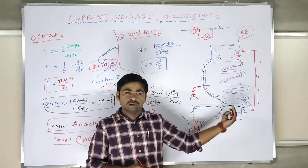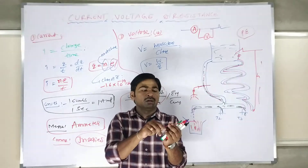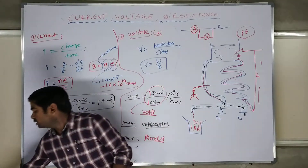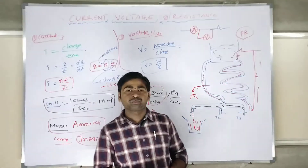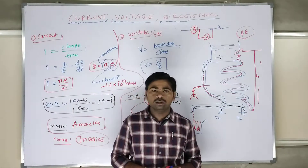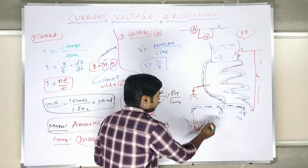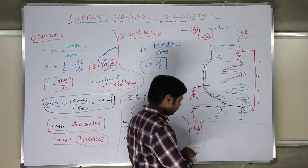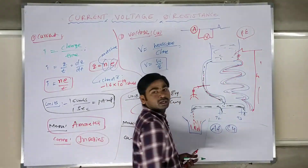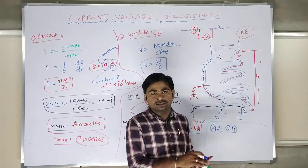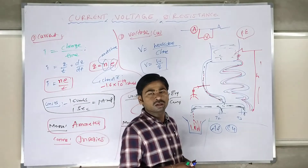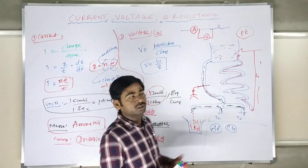Resistance is the property of a material which opposes the flow of electrons. For example, if you use an aluminium conductor, some opposition takes place. If you use copper, there is less opposition — less resistance. Copper is a better conductor, so it has less resistance. Good conductor means less opposition, less resistance.